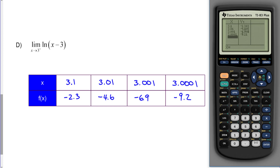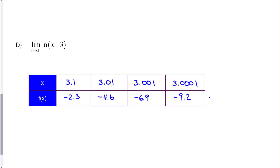This function is not growing very rapidly, but it's not approaching a single number — the y values are approaching negative infinity. Even very close to x = 3, these numbers keep getting larger in magnitude. So this right-handed limit equals negative infinity.